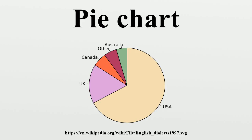Nightingale published her rose diagram in 1858. The name "Coxcomb" is sometimes used erroneously — this was the name Nightingale used to refer to a book containing the diagrams, rather than the diagrams themselves. It has been suggested that most of Nightingale's early reputation was built on her ability to give clear and concise presentations of data.